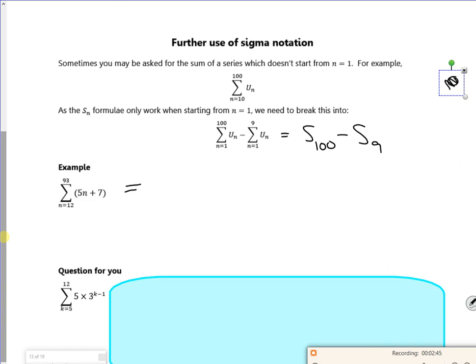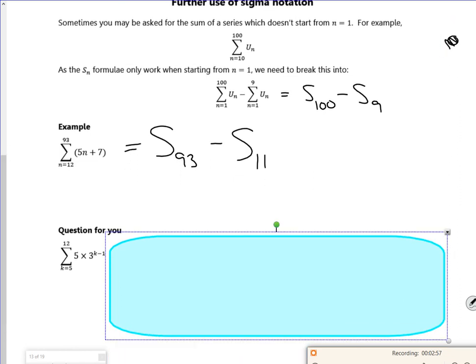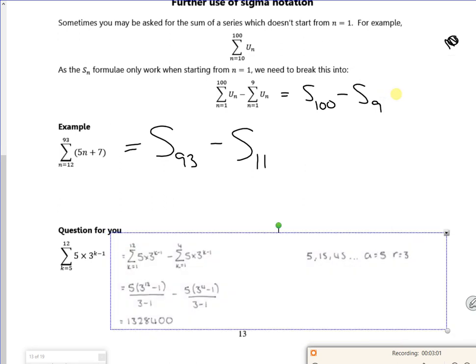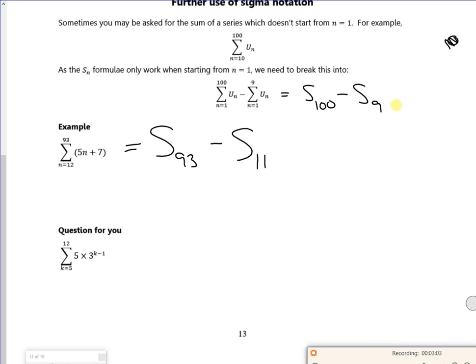So this one would be, from 12 to 93, it would be the sum of the first 93 terms minus the sum of the first 11 terms. Because I want from the 12th to the 93rd. Just ignore what it says up here. So I'm trying to realize that from 5 to 12, it's the sum of 12 terms minus the sum of the first 4 terms, because you're starting at 5.